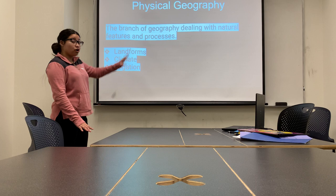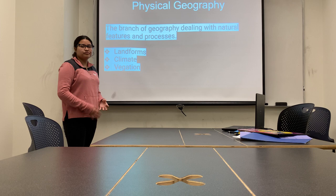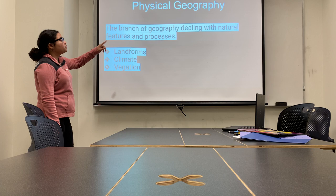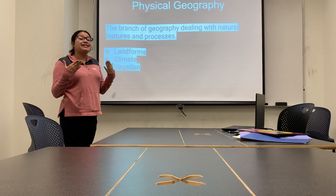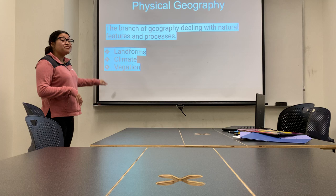But what even is physical geography? Physical geography is a branch of geography dealing with natural features and processes — the physical characteristics that we can see. We are going to be mainly focusing on the landforms, the climate, and the vegetation of these regions.